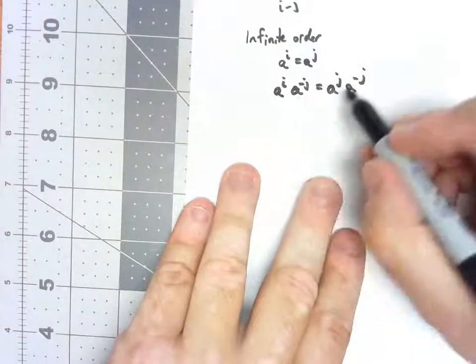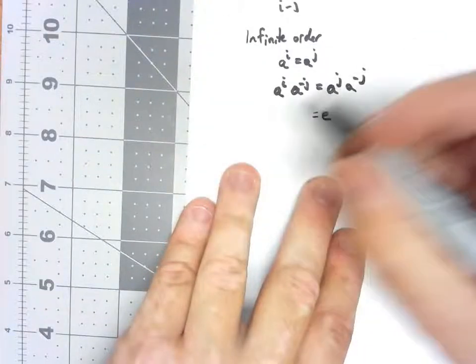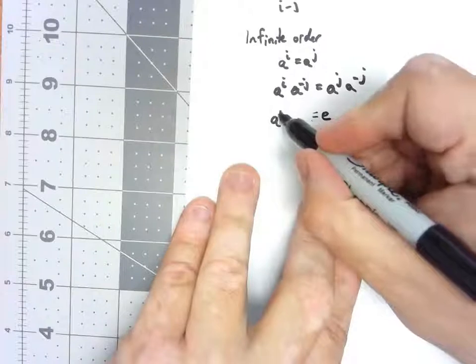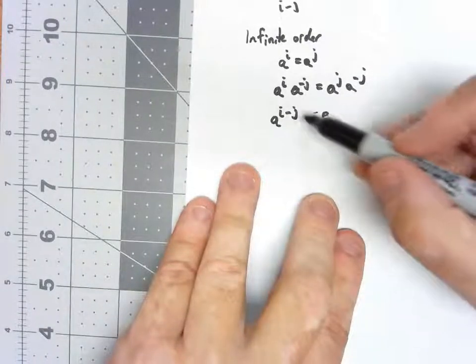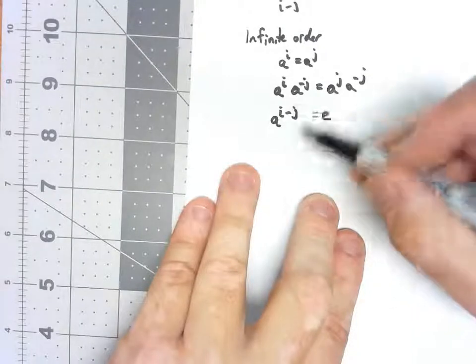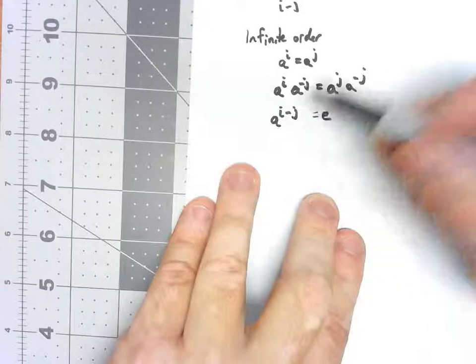Well, what we know about these things, these things are inverses, so that has to be the identity, and this would be A to the I minus J. And by looking at our whole definitions of what exponents mean, we can do that.